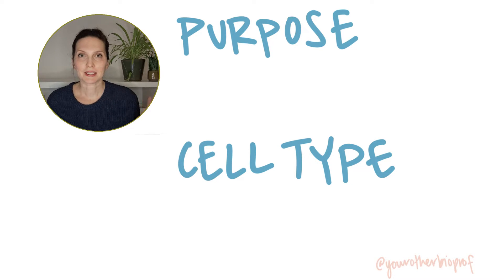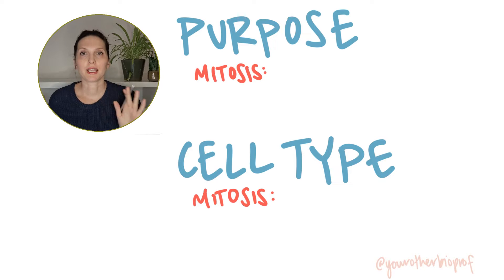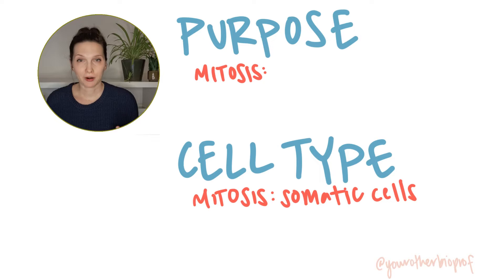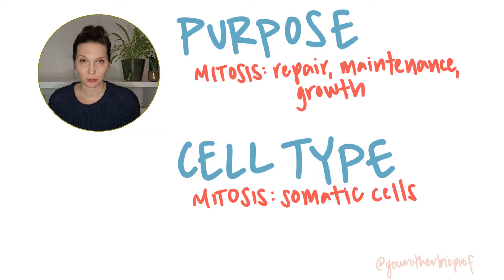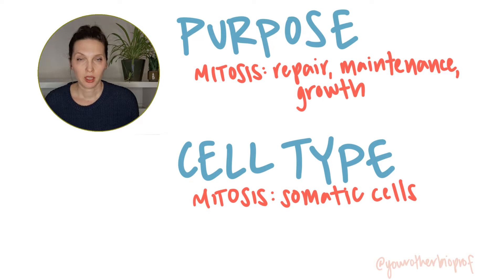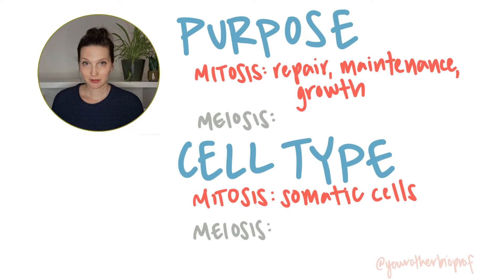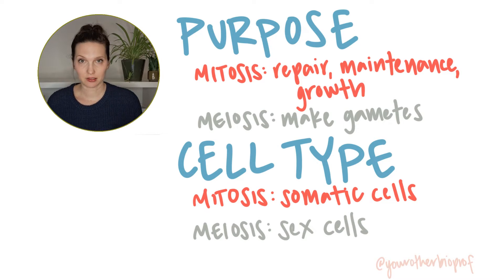Let's start with purpose and cell type. With mitosis, you are producing daughter cells that are identical to the original parent cell. You're going to see mitosis performed by somatic cells — body cells — for the purposes of repairing or maintaining the body, or for growth, adding more cells to that organism. For meiosis, we're making cells that are different from the original parent cell. This is going to be done to produce gametes, and this is the process you're going to see with sex cells.